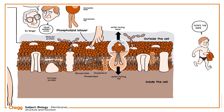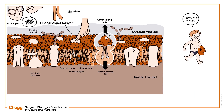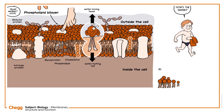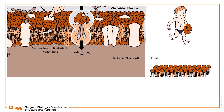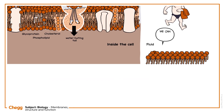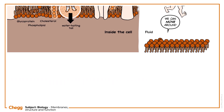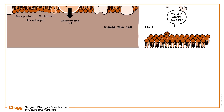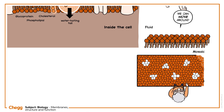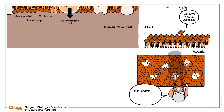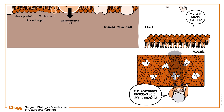Singer and Nicholson compared the structure of membranes to a fluid, because phospholipids can move around within their layers, and to a mosaic, because the scattered proteins in the bilayer resemble a mosaic if you view it from above.